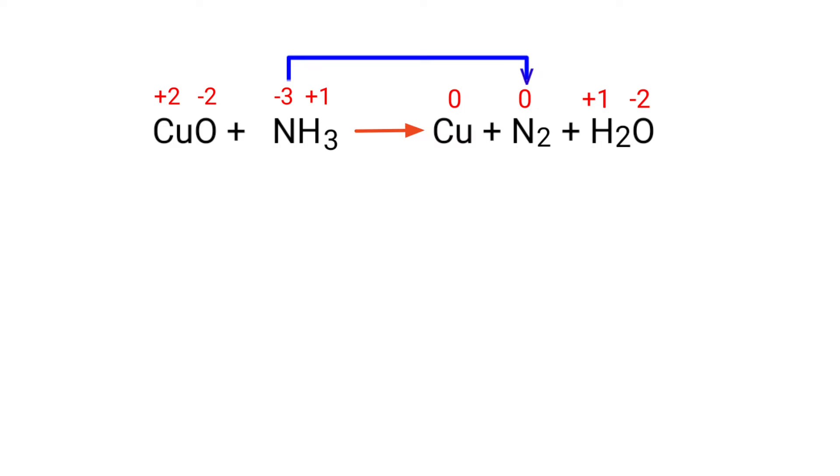In this equation, nitrogen has a charge of minus 3 and it's changing into 0, so nitrogen is being oxidized. The copper has a charge of plus 2 and it's changing into 0, so copper is being reduced.